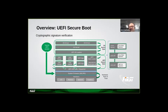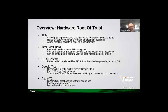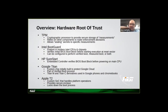Rootkits and bootkits can exploit this single point of failure to inject themselves into the boot chain. Notable hardware root of trust implementations include HP Sure Start, Google Titan chip, and Apple T2. Interestingly, they all have very vendor-specific implementations that are difficult to verify and understand externally — you basically have to trust them. Intel Boot Guard also requires trusting certain manufacturer decisions, whereas OpenTitan offers more transparency.